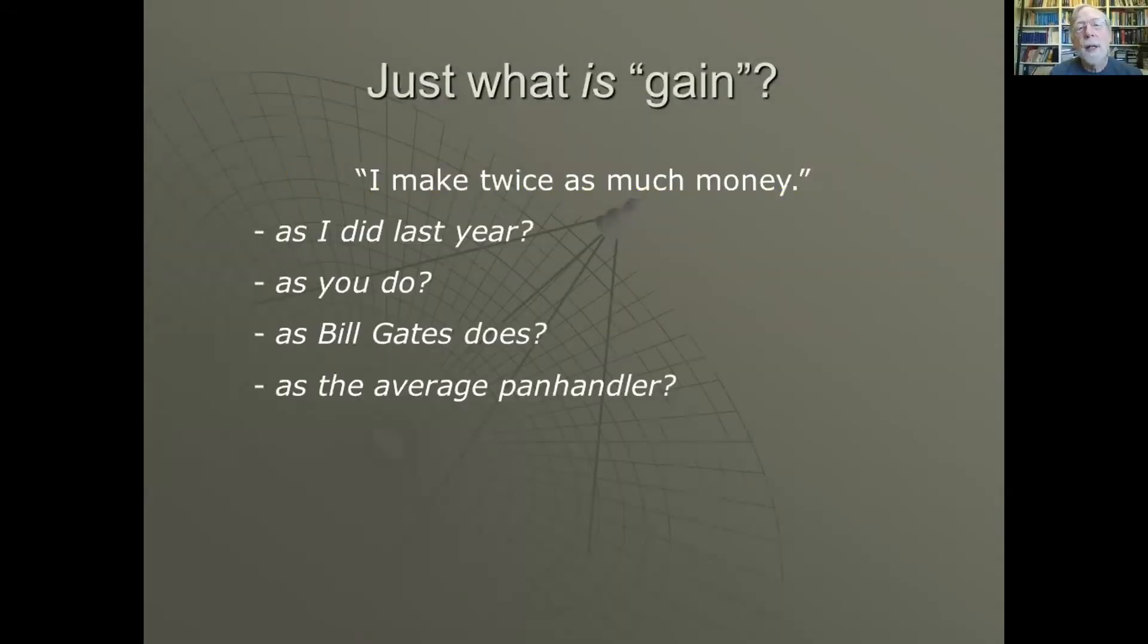Now I've been talking a lot about gain without really explaining too much exactly what it is. When you say an antenna has got the gain of so many dB, it's like saying I have twice as much money or I make twice as much money. And the question is what does that mean? Does it mean I made twice as much as I did last year, or as you do, or Bill Gates, or the average panhandler? Just saying that I make twice as much money is meaningless. And similarly, saying that an antenna has a gain of 6 dB is also meaningless because gain is a relative number.